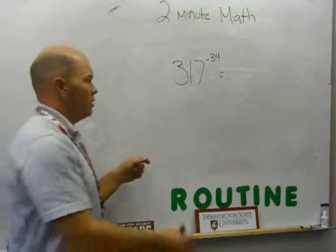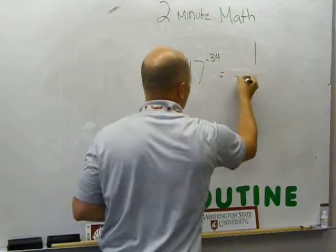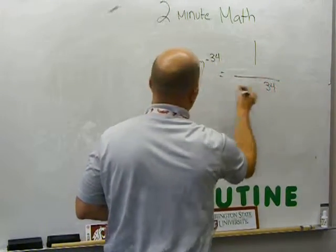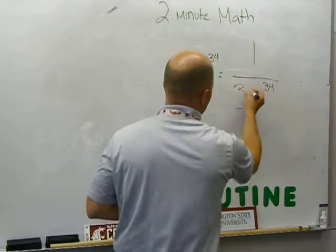Now, that number looks intimidating, but we remembered our rule. So, the first thing we did when we saw the negative exponent is just write 1 over, turned our exponent into a positive, and then slid our base number over.